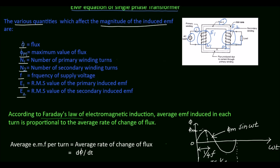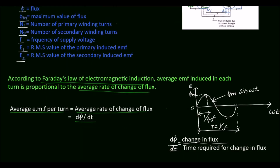According to Faraday's law of electromagnetic induction, the average EMF induced in each turn is proportional to the average rate of change of flux. So the average EMF per turn is equal to the average rate of change of flux, which is dφ/dt. The induced fluxes are alternating in nature. Since f is the supply frequency, the time required to complete one cycle is 1/f. φm is the maximum value of the flux.